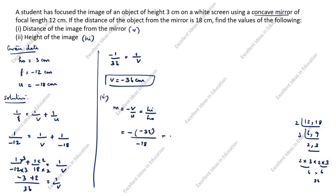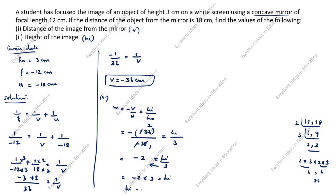The two negatives cancel: minus 36 divided by minus 18 equals hi by 3. Simplifying, 36 divided by 18 equals 2, so minus 2 equals hi by 3. Cross-multiplying: minus 2 into 3 equals hi, therefore hi is equal to minus 6 centimeter.